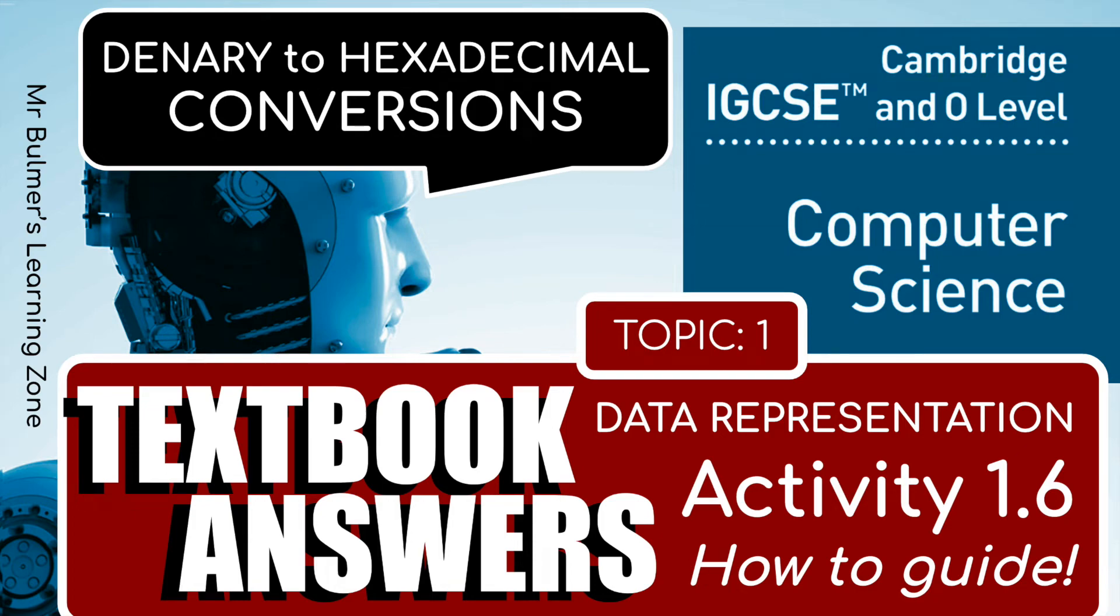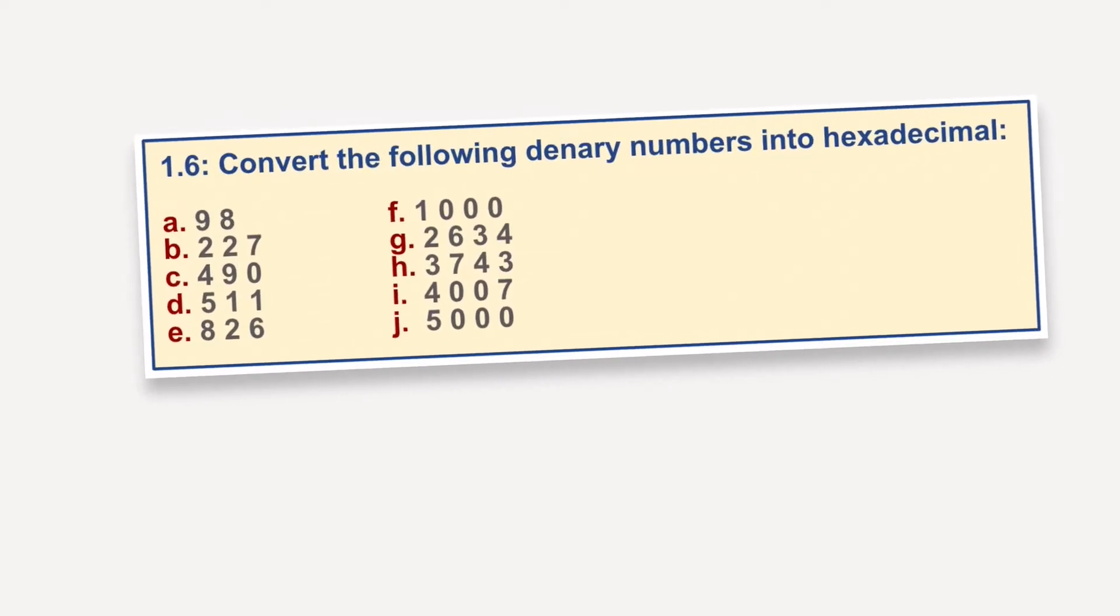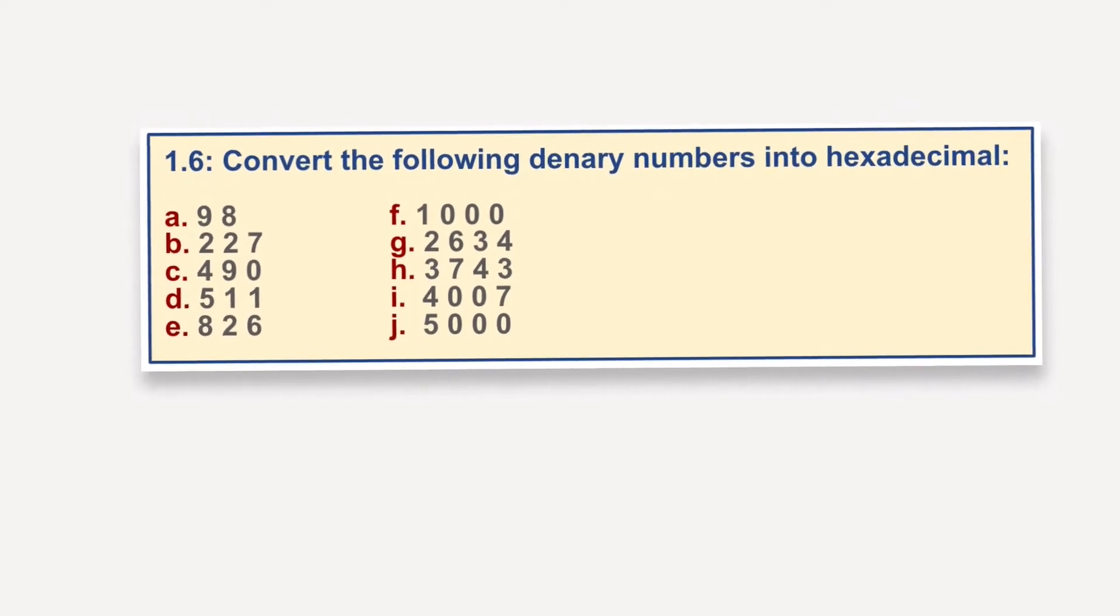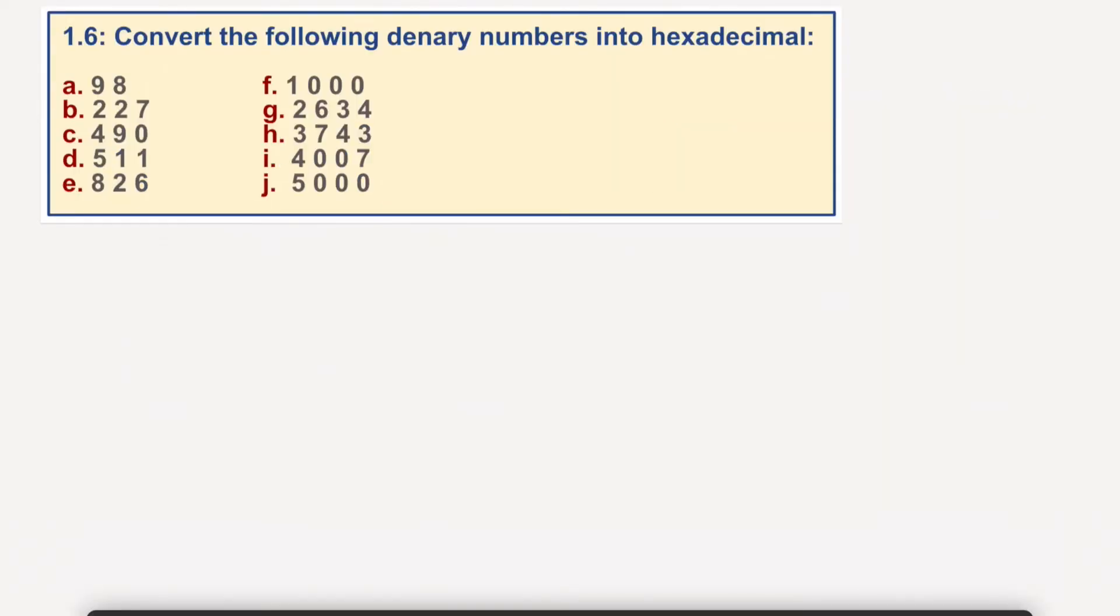Okay, we're going to have a look at 1.6, converting the following denary numbers into hexadecimal. Okay, what I'm going to do with this, I'm going to start with a.